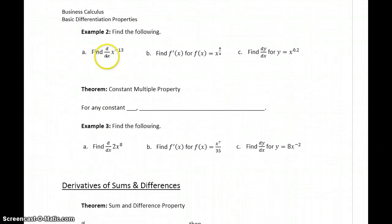We want to, in part a here, find the derivative of x to the negative 13th. So this would become negative 13 times x to the negative 13 minus 1, which becomes negative 13 x to the negative 14th. So the derivative of x to the negative 13th, again we bring that exponent down as a factor in front, and reduce the original exponent by 1.